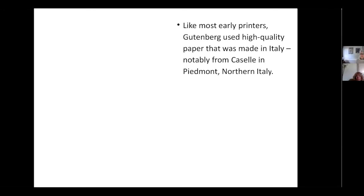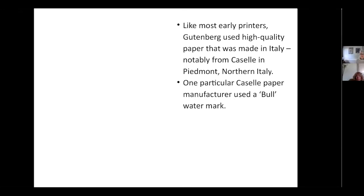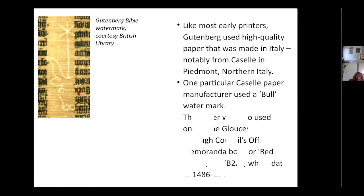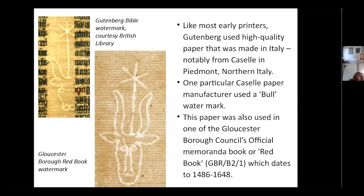Like most printers, Gutenberg used high-quality paper made in Italy, usually from Fabriano in Piedmont, northern Italy. One particular paper manufacturer used a bull watermark — you can see this picture on the left. This is from one of the earliest copies of the Gutenberg Bible from the British Library. This paper was also used in one of the Gloucester Borough Council's red books — their minute books. The earliest one dates to 1486, finished in 1648. So straight away, we can see Gloucester were obtaining paper from somewhere in Italy to use in their minutes.